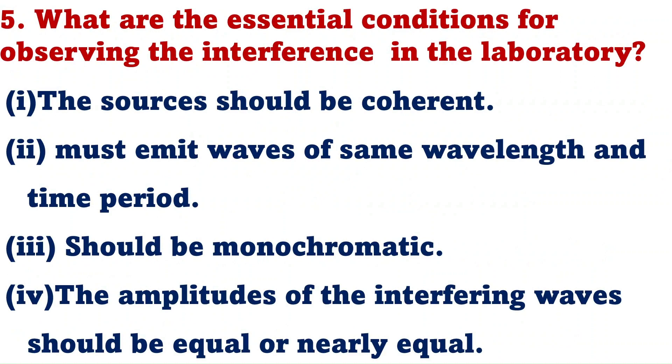What are the essential conditions for observing interference in the laboratory? The essential conditions are four. First, the sources should be coherent and must emit waves of same wavelength and same time period. The sources should be monochromatic, and the amplitudes of the interfering waves should be equal or nearly equal.